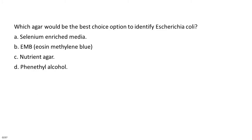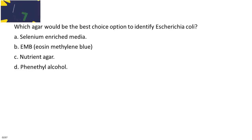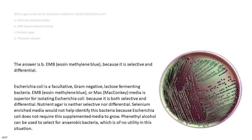Which agar would be the best choice to identify Escherichia coli? A. Selenium enriched media. B. EMB eosin methylene blue. C. Nutrient agar. D. Phenethyl alcohol. The answer is B. EMB eosin methylene blue, because it is selective and differential. As E. coli is a facultative, gram-negative, lactose-fermenting bacteria, EMB or MAC media is superior for isolating E. coli. Nutrient agar is neither selective nor differential. Selenium enriched media would not help identify this bacteria. Phenethyl alcohol can be used to select for anaerobic bacteria, which is of no utility in this situation.